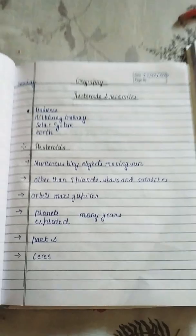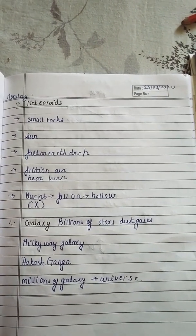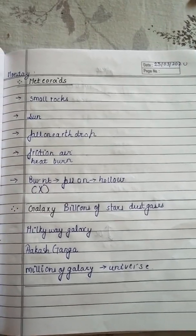That is meteoroids. Meteoroids are small rocks from the sun that fall on Earth. Due to friction with air they heat, burn, and fall on Earth's surface.